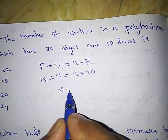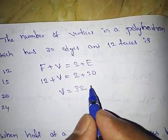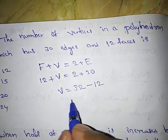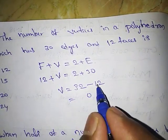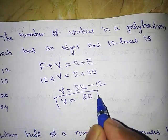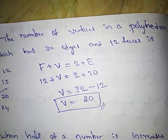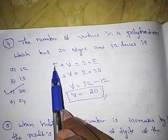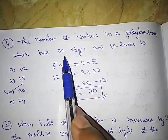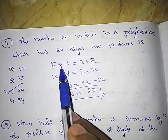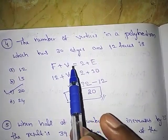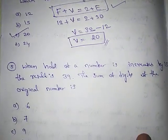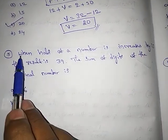So V = 30 + 2 - 12 = 32 - 12 = 20. Vertices = 20, which is option C. In the exam they may ask for faces, vertices, or edges — any two will be given, and you find the third using Euler's formula: F + V = 2 + E.